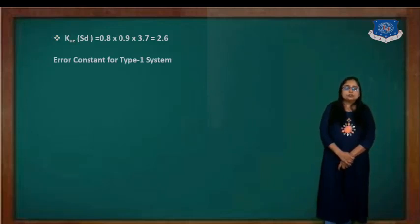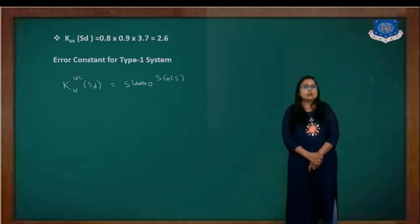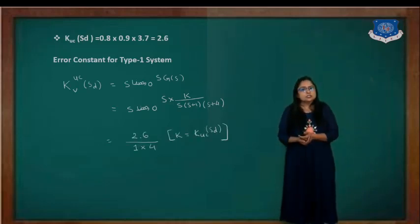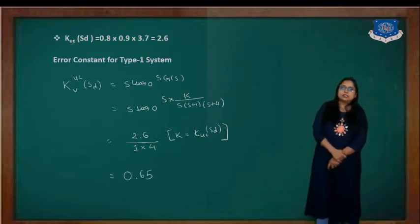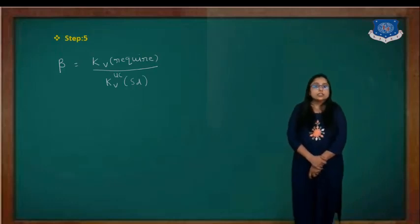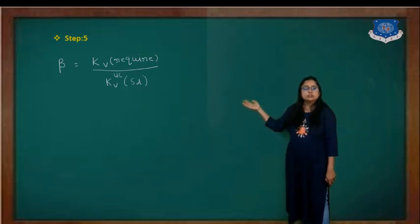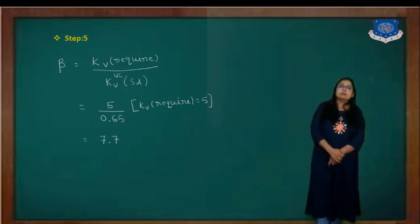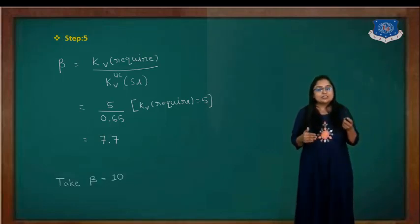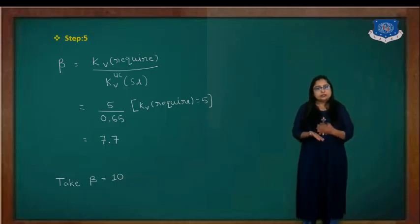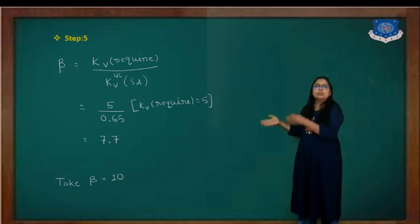For a type 1 system, the velocity error constant is Kv equal to the limit as S tends to 0 of S times G(S). Substituting the uncompensated system gain K equals 2.6, we get Kv equal to 0.65. Now we find beta: beta equals Kv_required divided by Kv_uncompensated. The required Kv is given in the question as 5. So beta equals 5 divided by 0.65, which gives 7.7. We take the higher value, so beta equals 10.